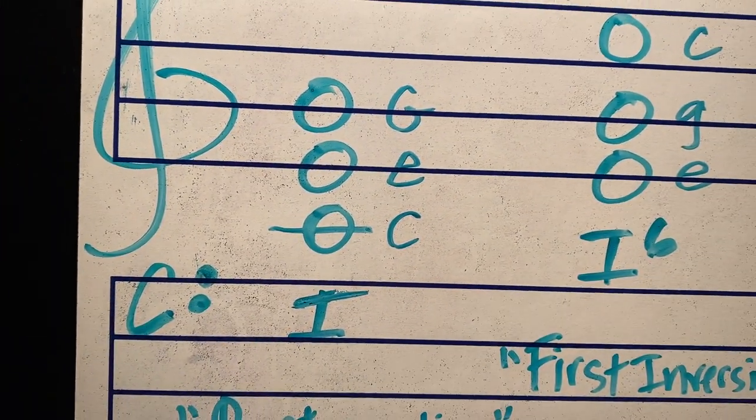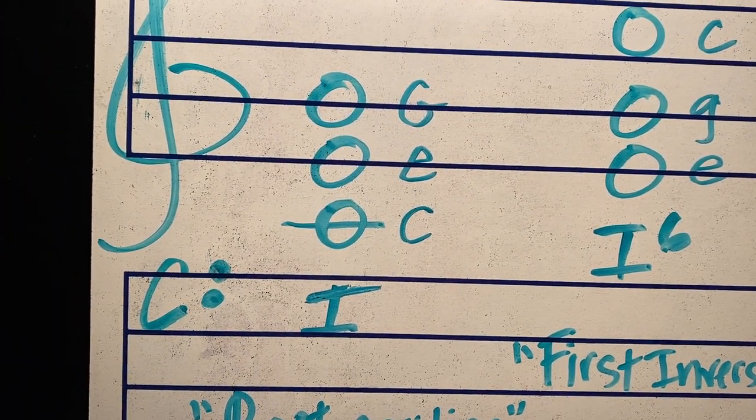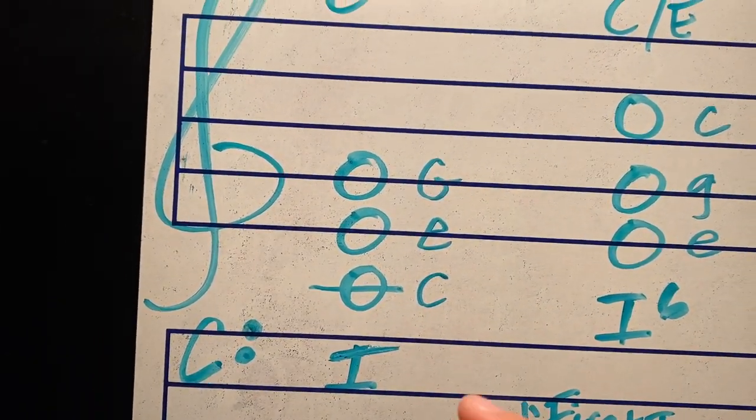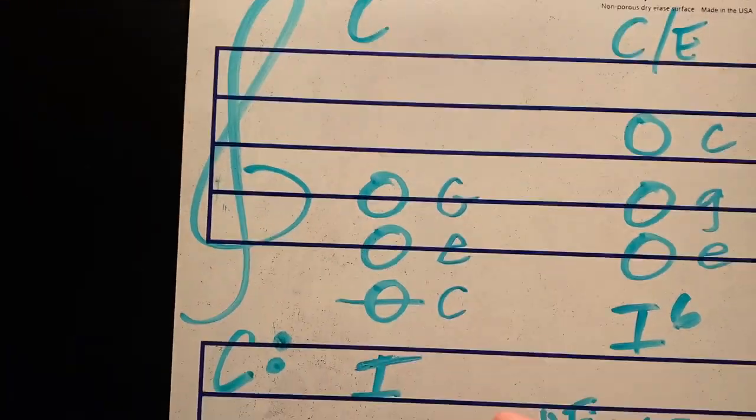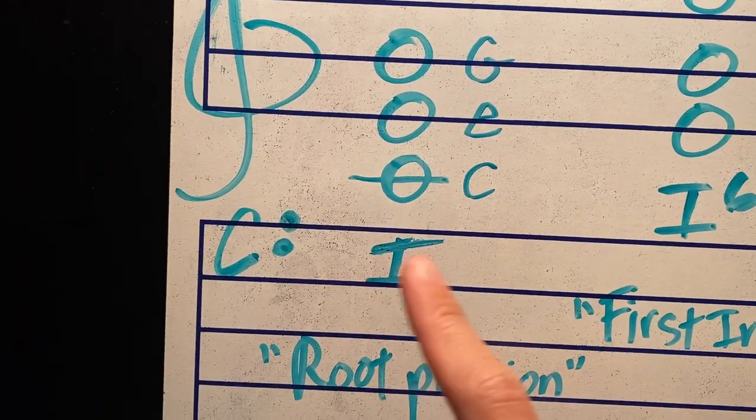Here we go, C, E, and G. And you can see it's stacked in thirds, C to E, E to G. And the way we label that chord is a C chord or a Roman numeral one.